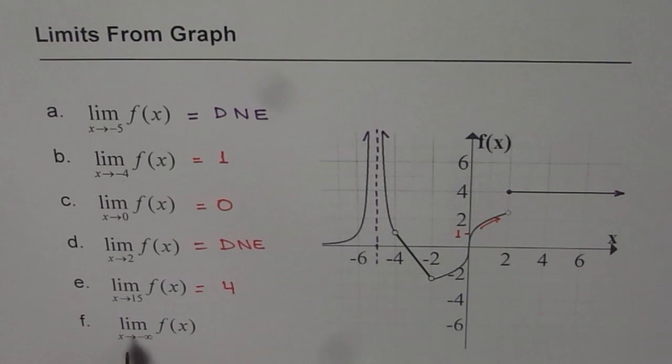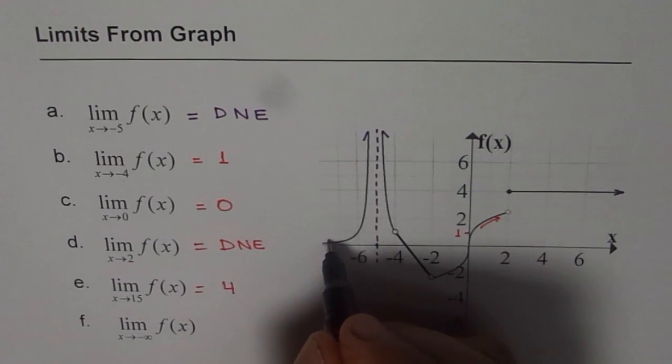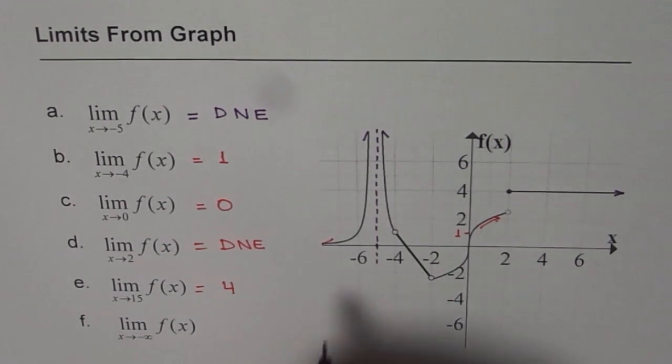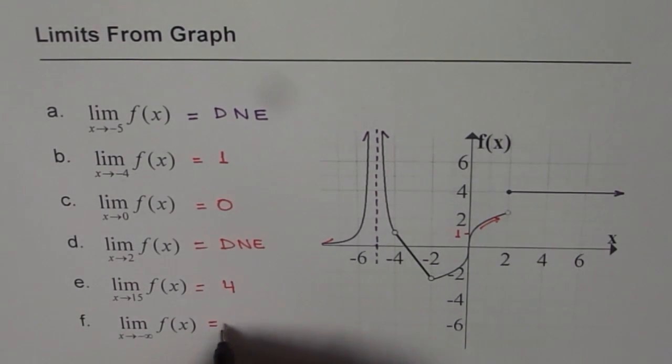The last one is limit of the function as x approaches minus infinity. So this is minus infinity. You can see clearly that the function is approaching 0. And therefore the answer for this is 0. So that is how you can find limit of a function from the graph.